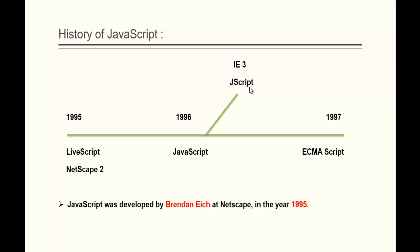Finally, in the year 1997, Netscape submitted JavaScript to the ECMA standard body to create an independent and officially standardized edition of JavaScript. The standardized edition of JavaScript was called ECMAScript. But people still today call it JavaScript because of the popularity it achieved in the earlier days.